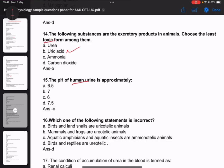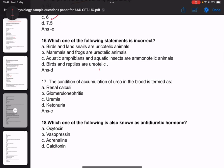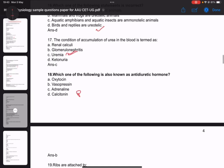Question sixteen: Which of the following statement is incorrect - answer D, birds and reptiles are ureotelic. Question seventeen: The condition of accumulation of urea in the blood is termed uremia. Question eighteen: Which of the following is also known as anti-diuretic hormone.